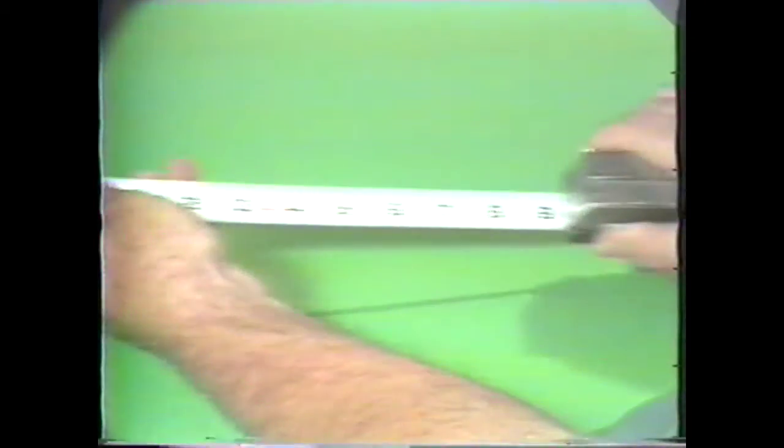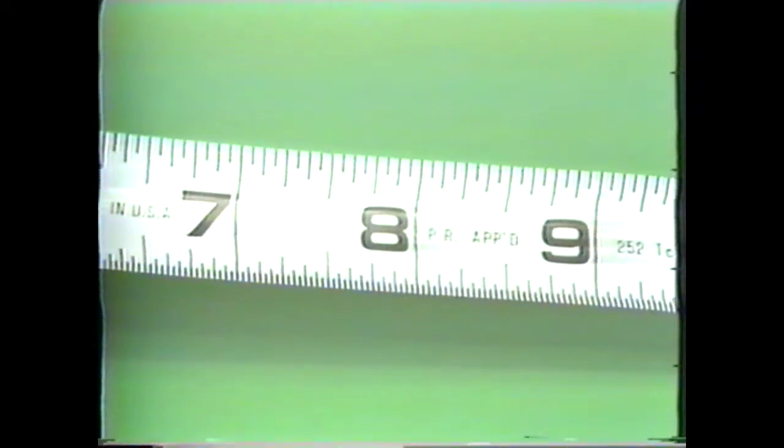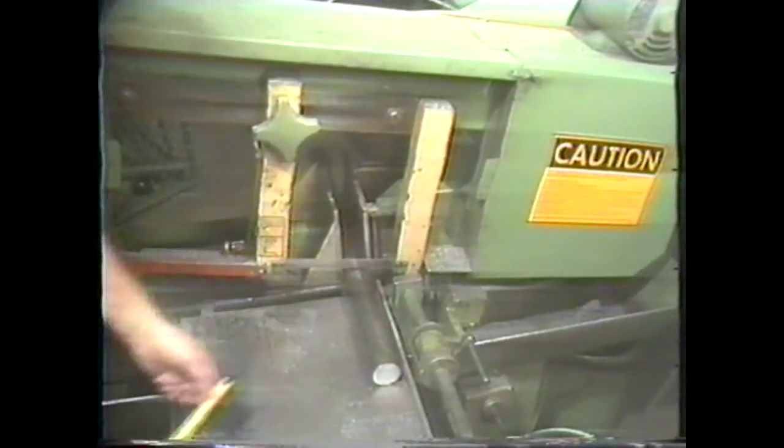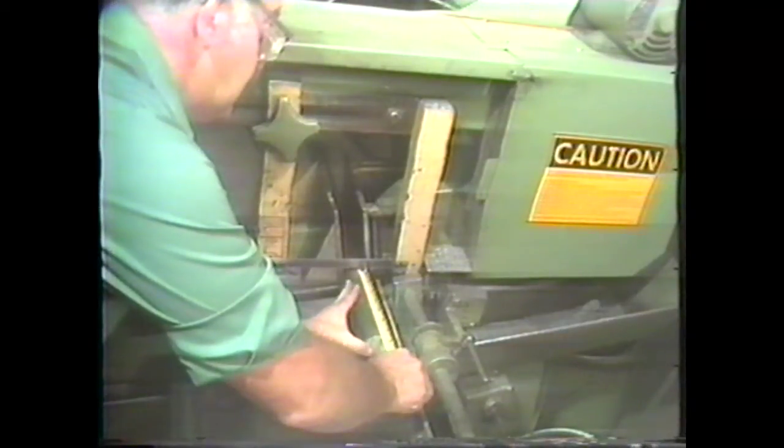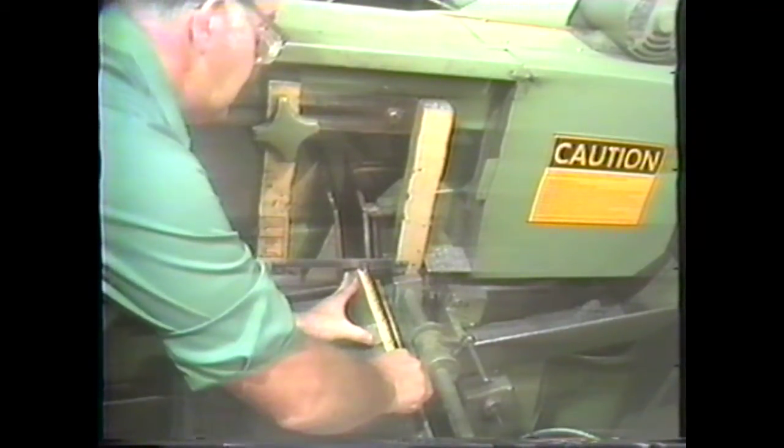A measuring device is as accurate as its smallest graduation. The regular shop tapes are generally graduated to a 16th of an inch. You would use the flexible tape around the cutoff saw, or in those areas where precise measurements are not a major concern.